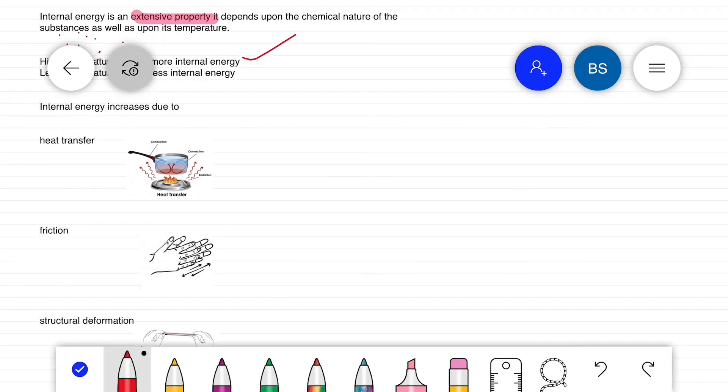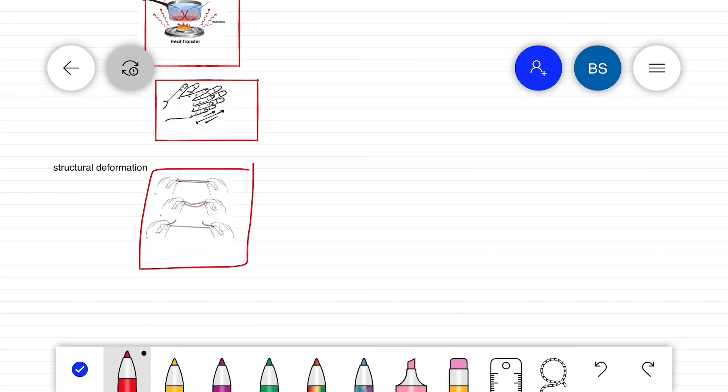Internal energy increases due to heat transfer, friction, and structural deformation like stretching a band.